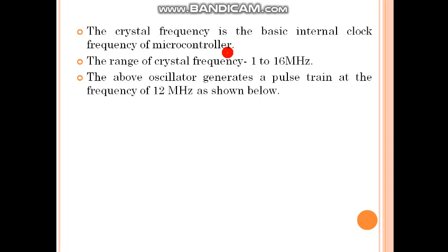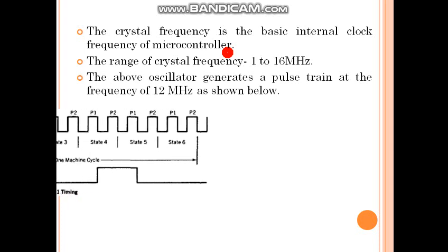The crystal frequency is the basic internal clock frequency of microcontroller. The range of crystal frequency is 1 MHz to 16 MHz. The above oscillator generates a pulse train at the frequency of 12 MHz.